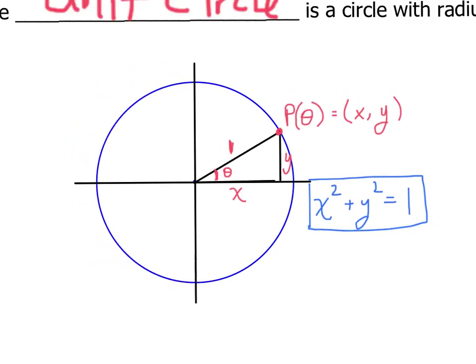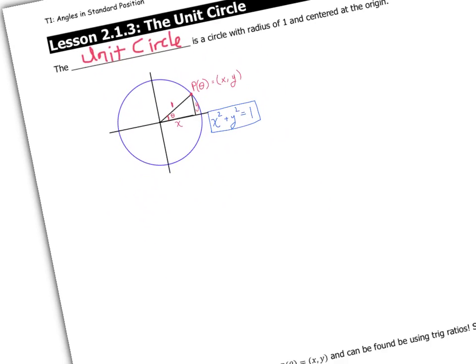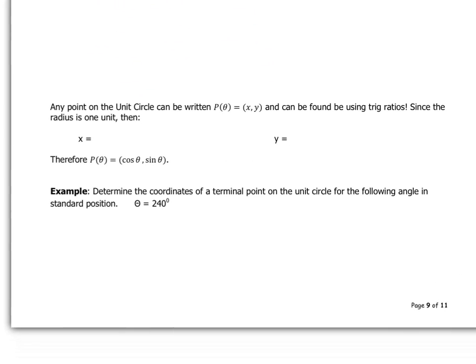Let's zoom out. Now, what else could we conclude? Well, any point on the unit circle, P(θ) = (x,y), can be found using trig ratios. Since the radius is 1 unit, then x would be exactly equal to the cosine of theta, and y would be equal to the sine of theta.